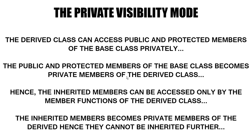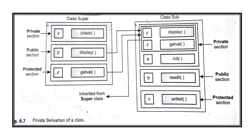Now we will see private visibility mode. In this, we can only inherit the public and protected members, and the derivation is private. The public members and protected members will become the private members of the new class. The inherited members can only be accessed by the member functions of the new class, because they become private. Private members can only be accessed by the member functions of that class. Therefore, these members cannot be inherited further, because we cannot inherit private members. So in the diagram, the public and protected members both go into the private section of the new class.